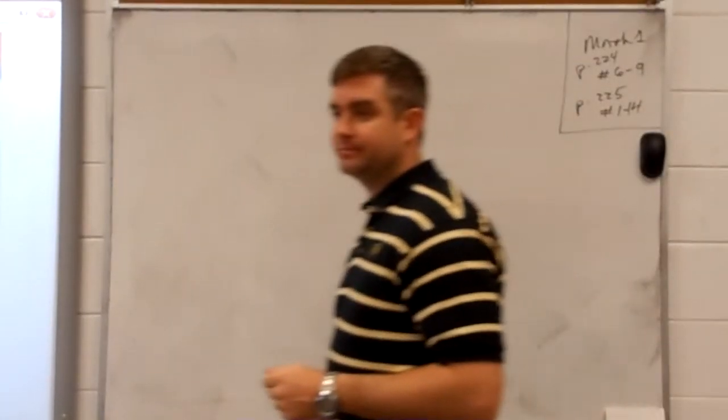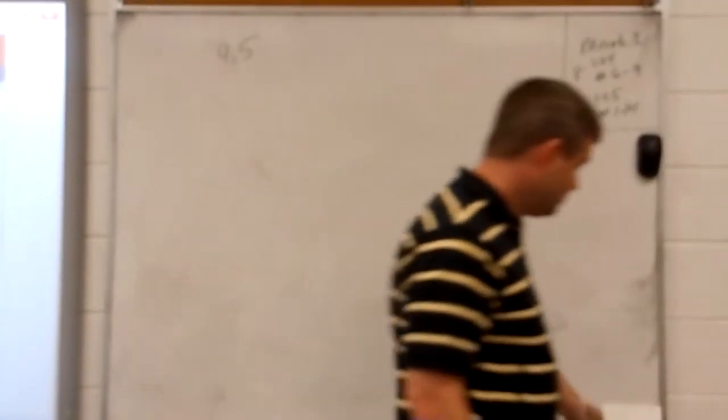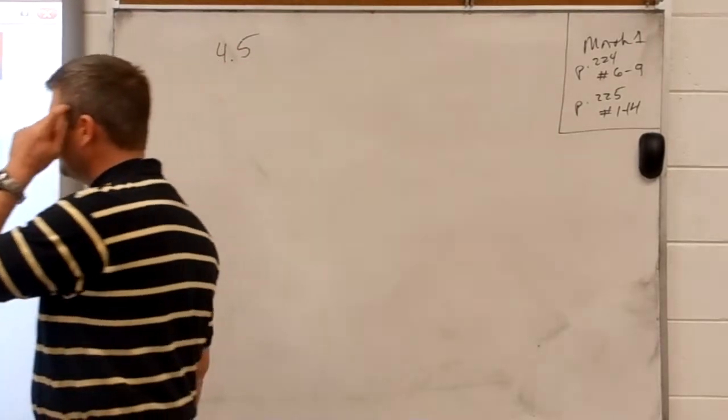All right, here we go. Quiet place. This is section 4.5, Math 1. We're talking about segment addition and angle addition. You've already copied down the box at the top of page 217. We're going to talk about postulates and theorems. A postulate is something that is accepted without proof — it is an accepted statement, a rule accepted without proof.